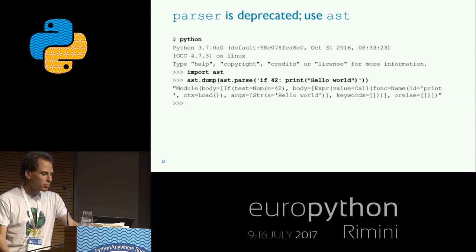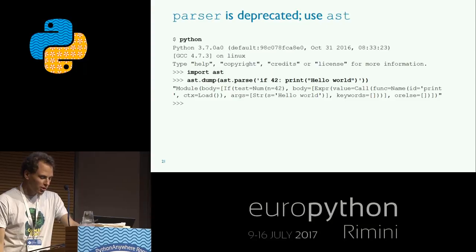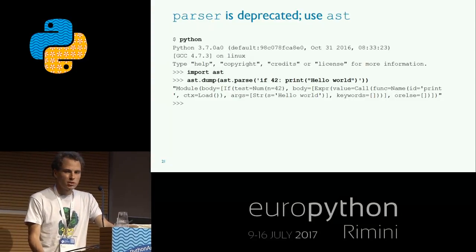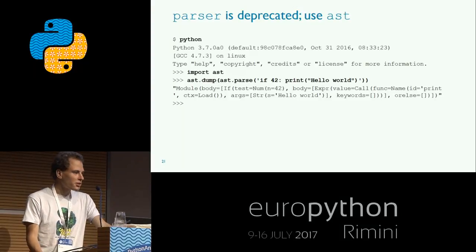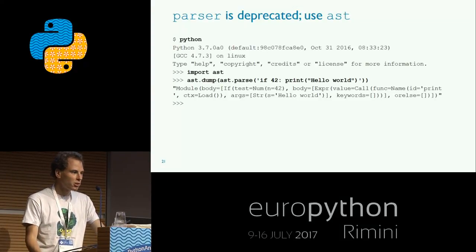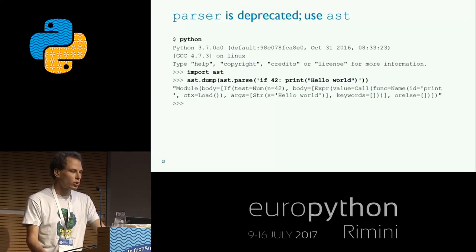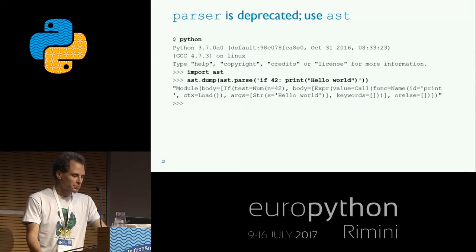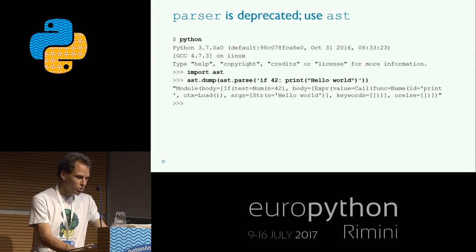The AST for the same example Python code is much more compact and almost human readable. Unlike the CST, which reflects how the program is represented in the source code, the AST reflects what the program actually intends to do. So it's actually the AST that the compiler runs on to generate the bytecode.